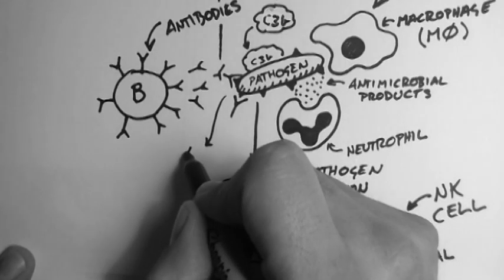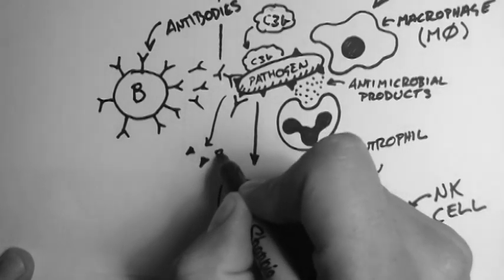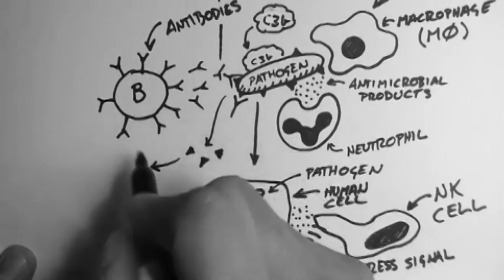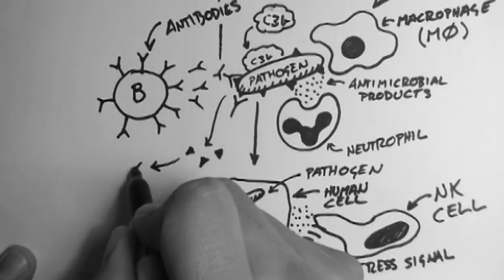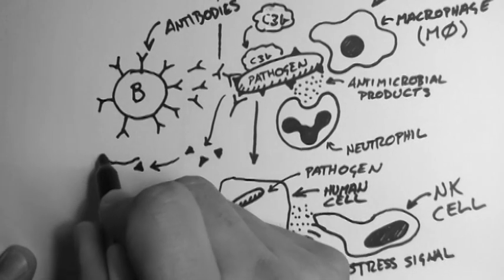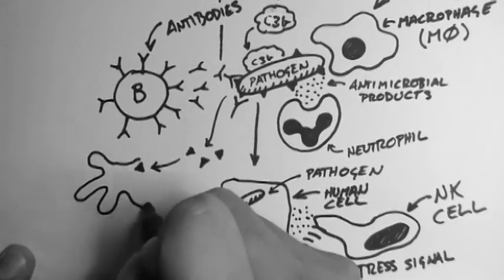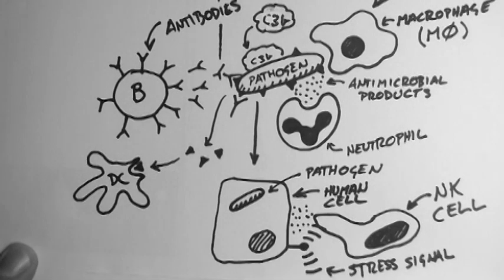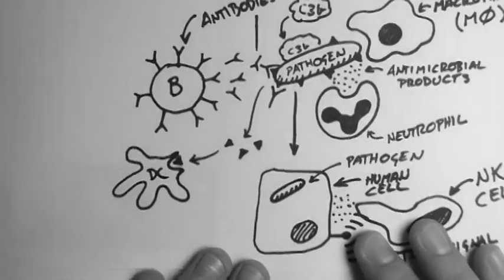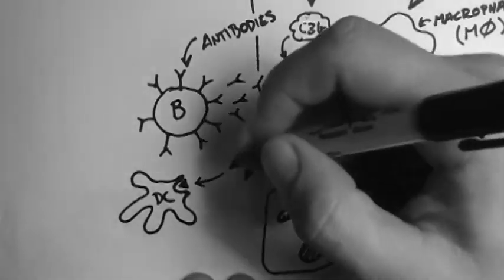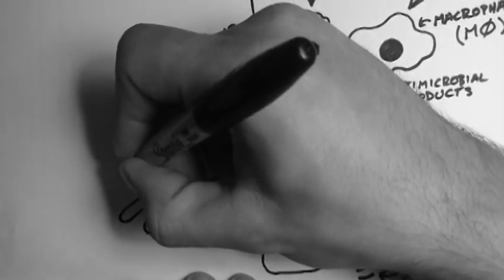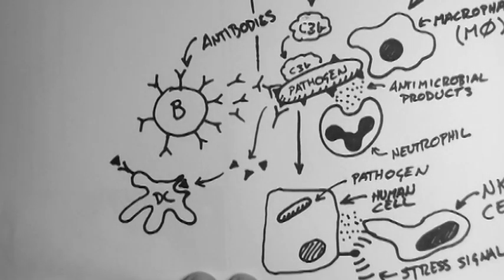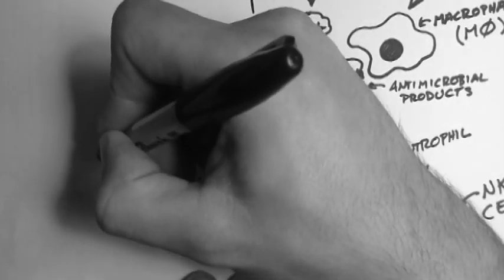Now little bits of these pathogens can come off, and they get swallowed up by a cell known as a dendritic cell, or DC for short. The DC puts these little bits of the pathogen in a molecule known as the MHC molecule.